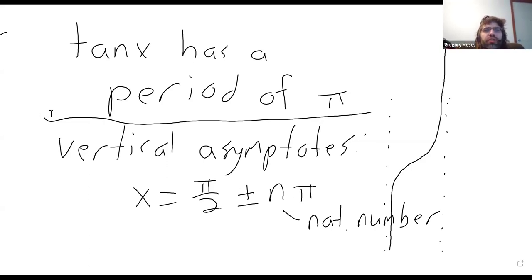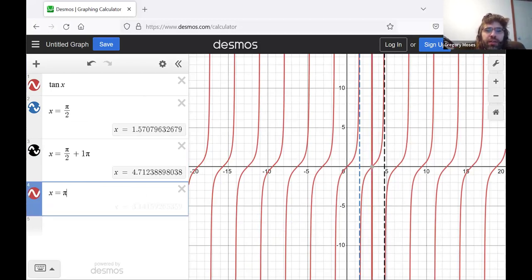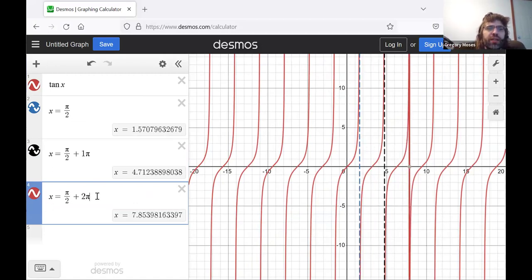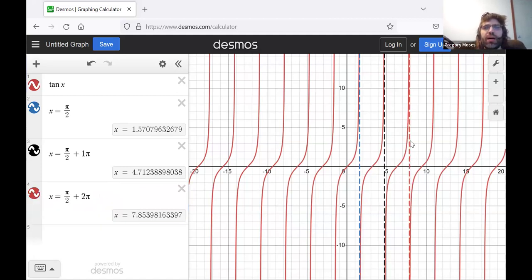You see there's a vertical asymptote at pi over 2. Then there's a vertical asymptote at pi over 2 plus 1 pi. The next vertical asymptote will be at pi over 2 plus 2 pi. And so on. And going to the left instead of to the right.